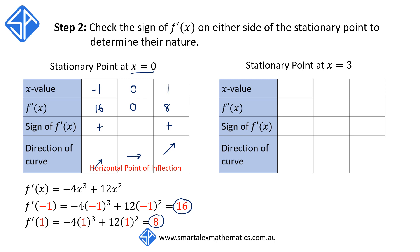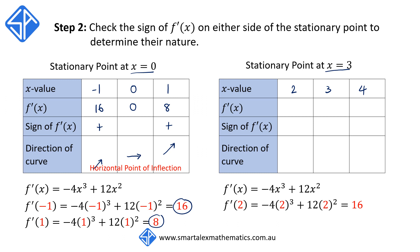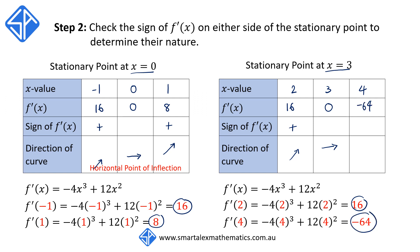For the stationary point at x = 3, I'll choose x = 2 to the left and x = 4 to the right. Evaluating f'(x) at x = 2 gives 16, which is positive, so the curve is increasing. At x = 3, f'(x) = 0, confirming the stationary point. At x = 4, f'(x) evaluates to -64, which is negative, so the curve is decreasing. Looking at the general shape of the curve, this tells us we have a maximum turning point at x = 3.